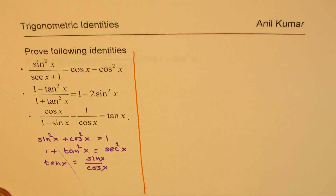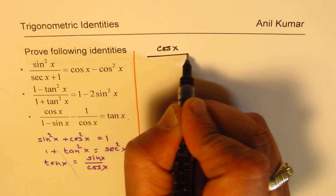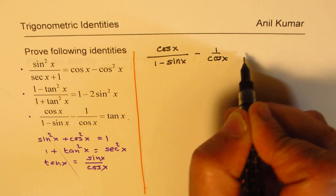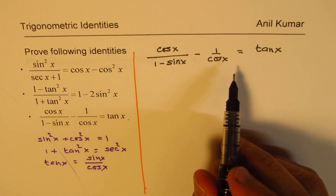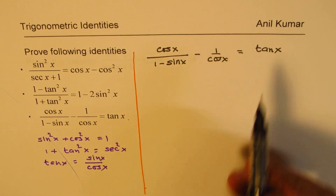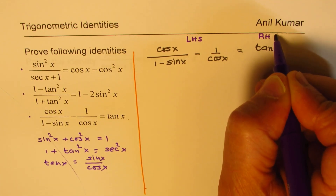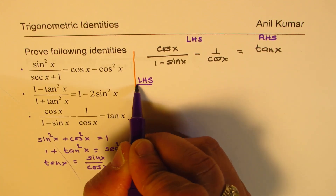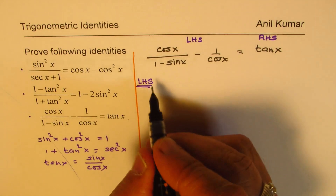Let us see how to prove them one by one. Let me begin with the last one: cosine x over 1 minus sine x, minus 1 over cosine x, equals tan x. Whenever we want to prove an identity, we start from one side and show it equals the other. We call this the left-hand side and the right-hand side. You always start from the more complicated one — in this case, the left-hand side.